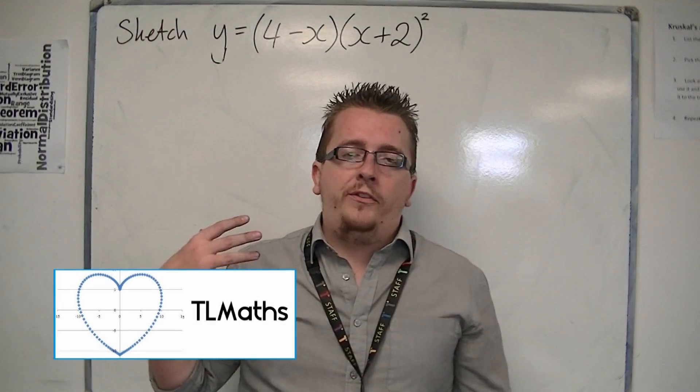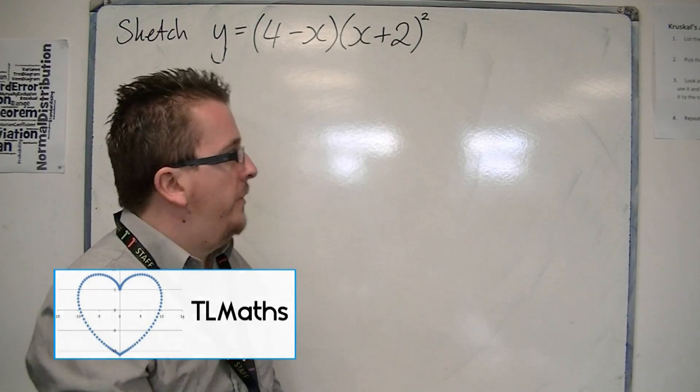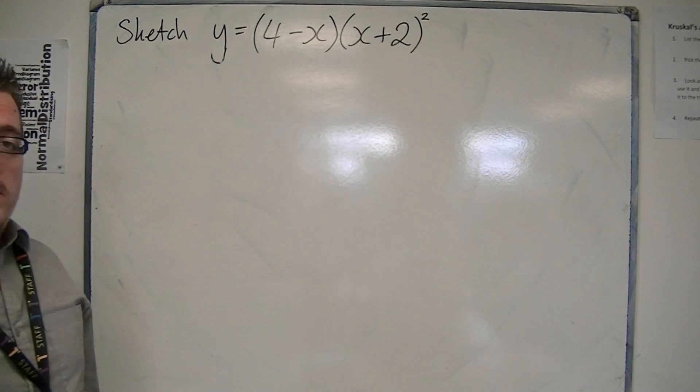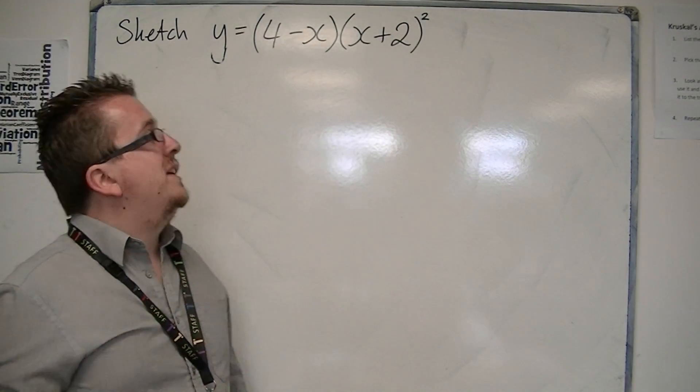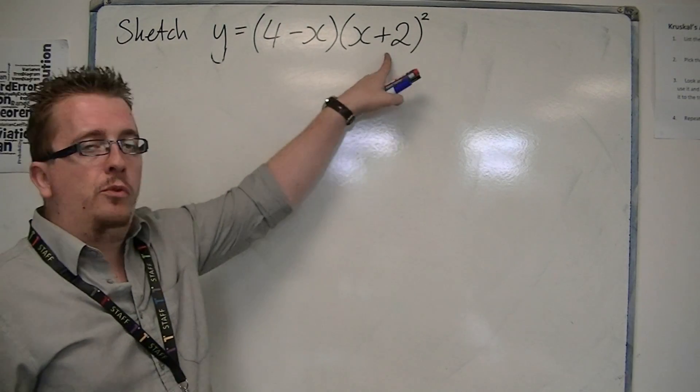This video is similar and continuing on from the previous one. We've got three linear terms, but we've got a repeated root again because we've got x plus 2 all squared.